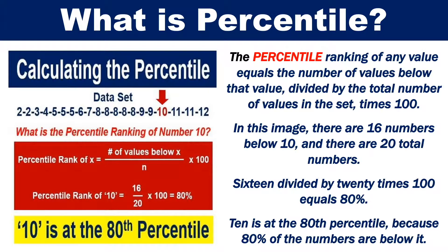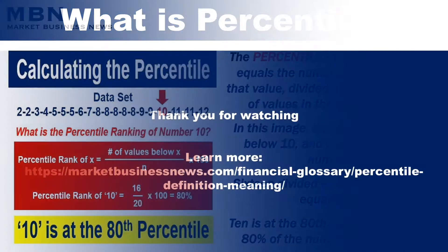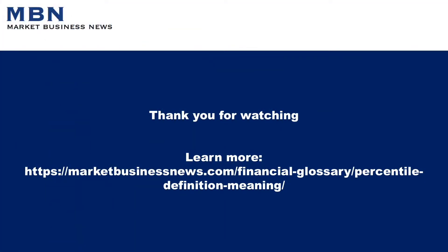In this image, there are 16 numbers below 10, and there are 20 total numbers. 16 divided by 20 times 100 is equal to 80. Therefore, 10 is at the 80th percentile, because 80% of the numbers are below it.